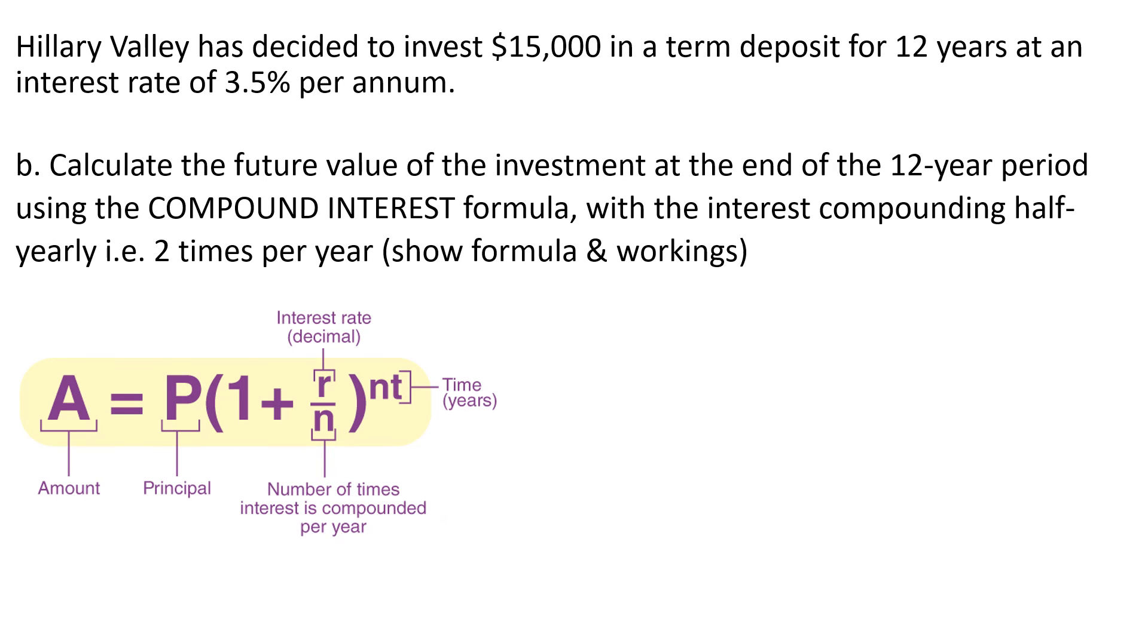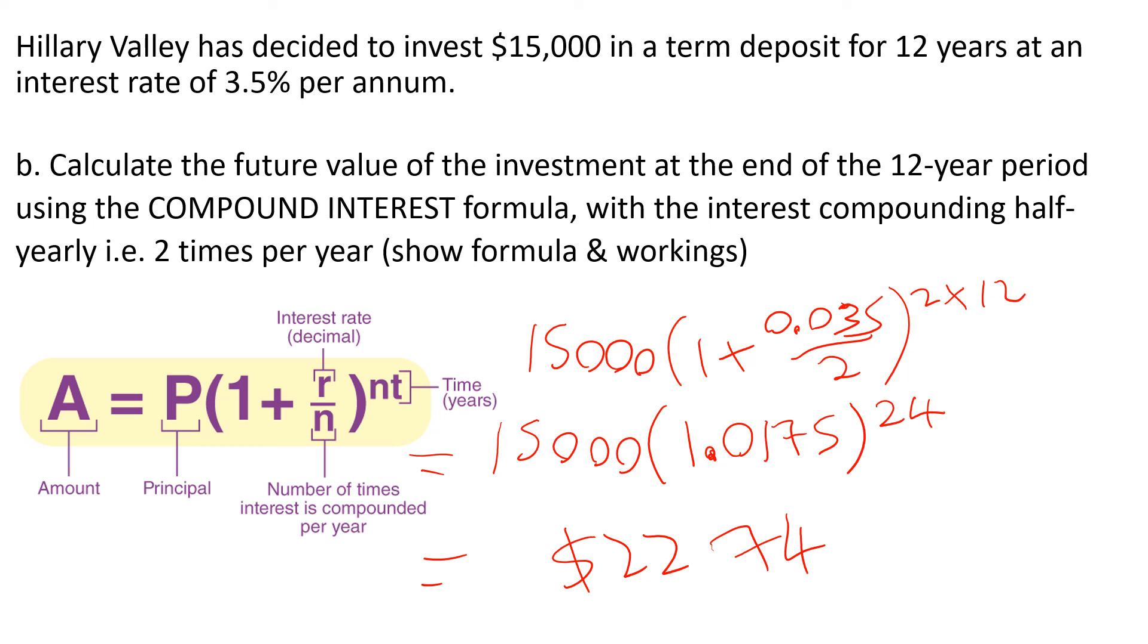So again, our equation 15,000. Principle 1 plus the interest rate as a decimal. Divided by N twice a year to the power of 2 times 12. So again, an extra step is recommended here. So 0.035 divided by 2 equals 0.0175. Again, check that on your calculator to the power of 24. And then we punch that into our calculator. And we get 22,747 as our future value.